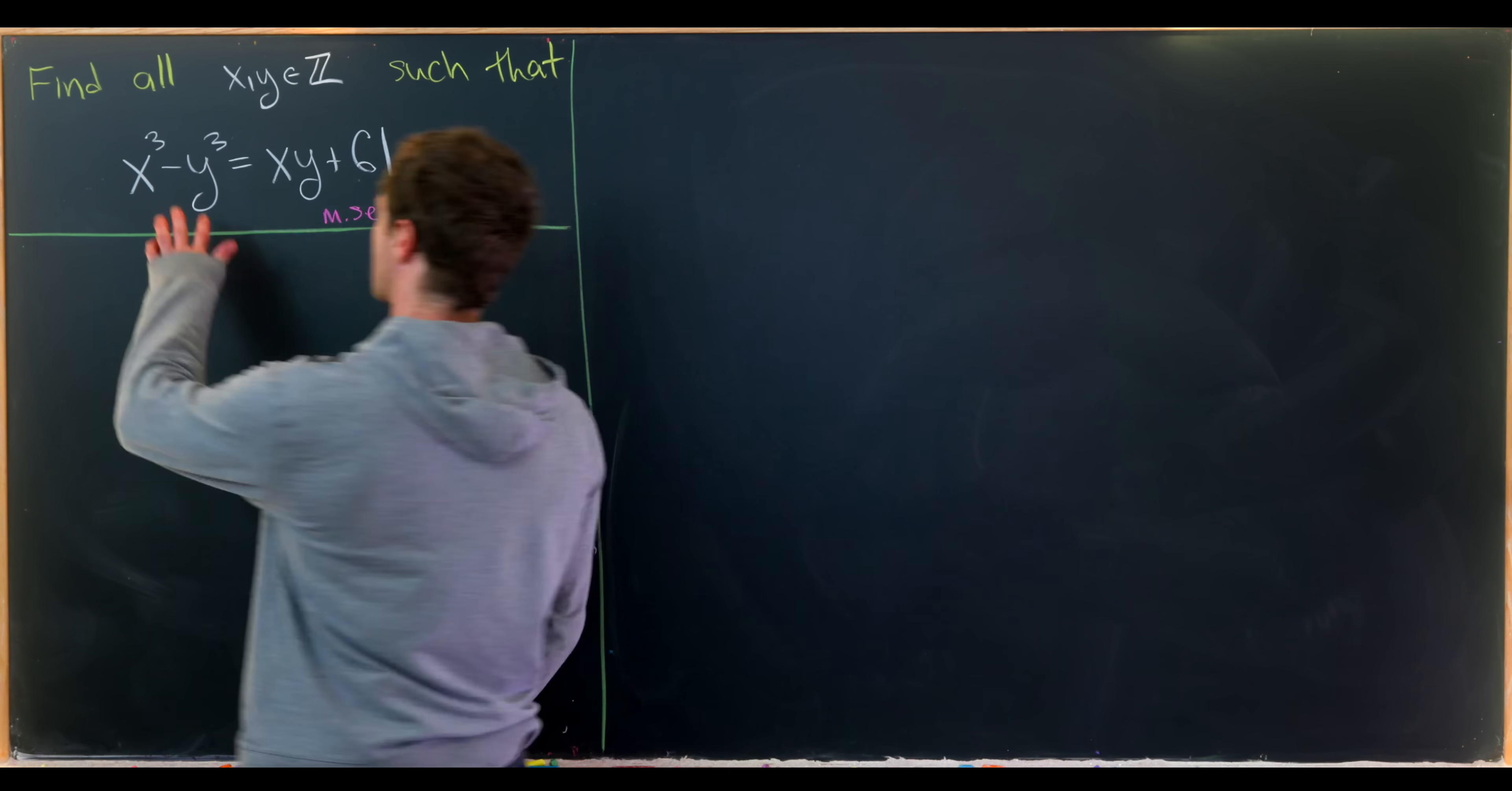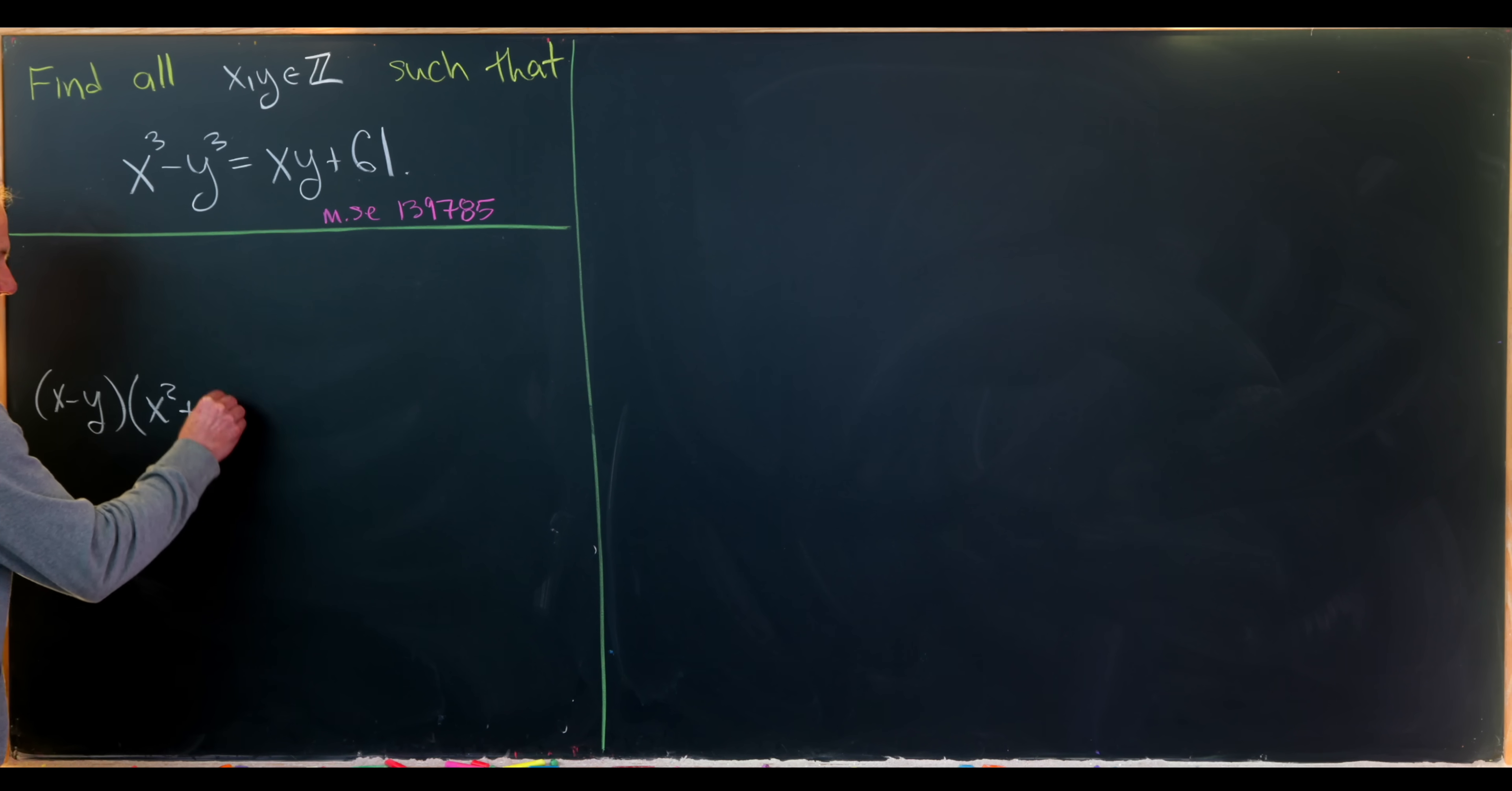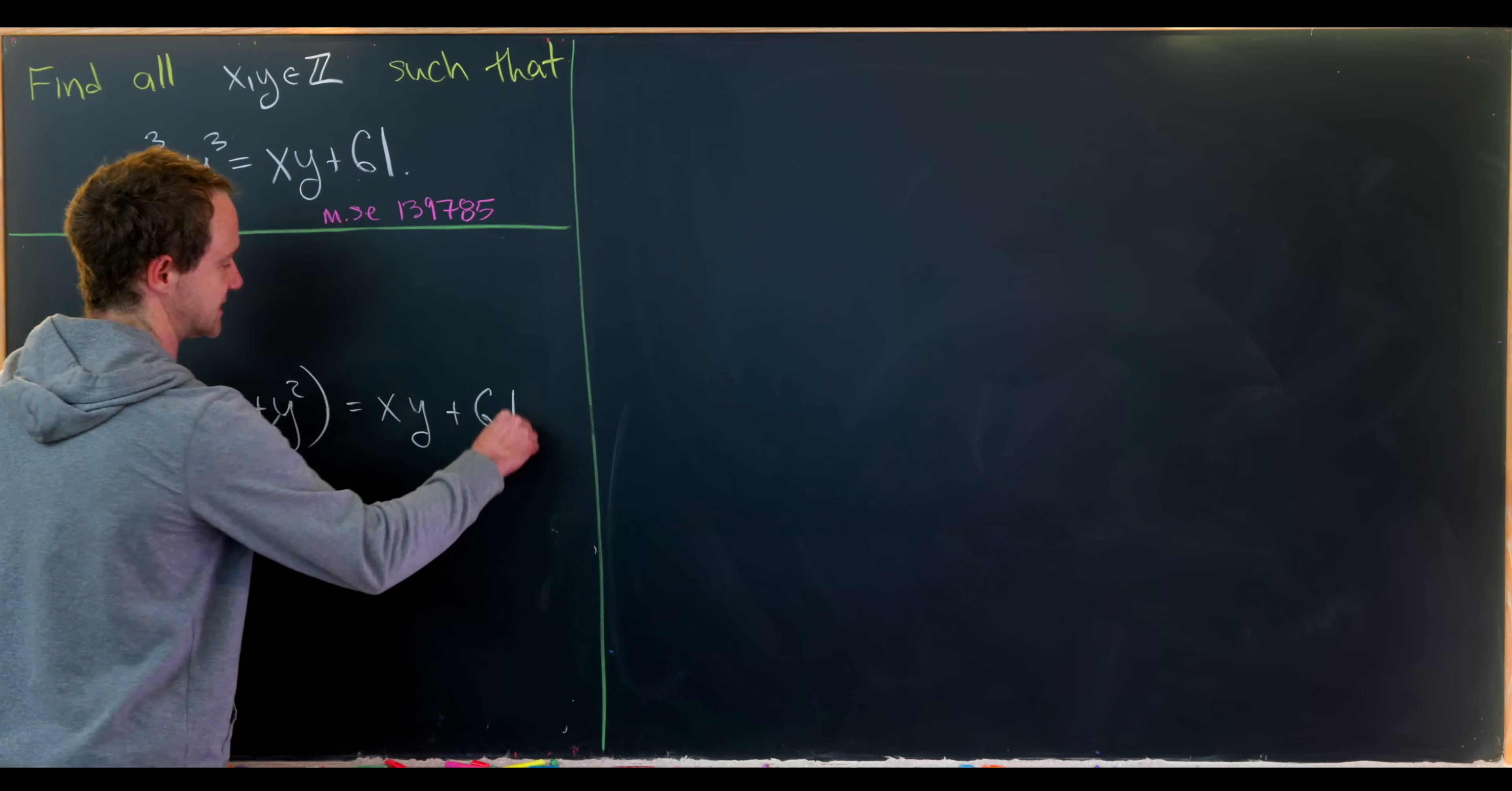Let's start by noticing that x cubed minus y cubed has a standard factorization - it's a difference of cubes factorization. It factors as x minus y times x squared plus xy plus y squared. So we can write the left hand side of our equation in this form and we have that's equal to xy plus 61.